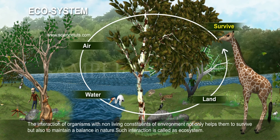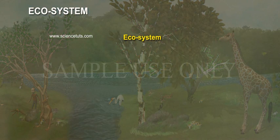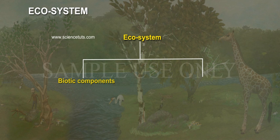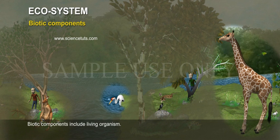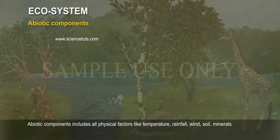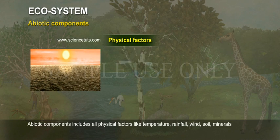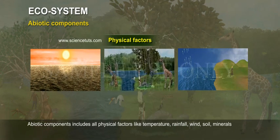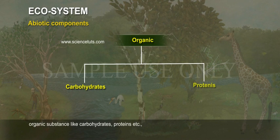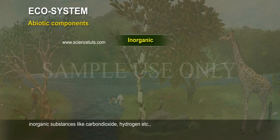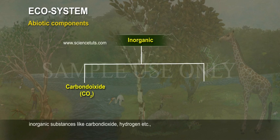Such interaction is called an ecosystem. The ecosystem consists of two components: biotic components and abiotic components. Biotic components include living organisms. Abiotic components include all physical factors like temperature, rainfall, wind, soil, minerals, organic substances like carbohydrates and proteins, and inorganic substances like carbon dioxide and hydrogen.